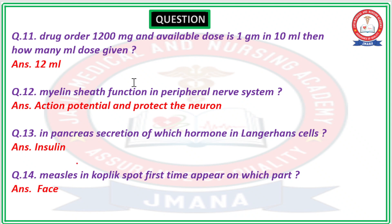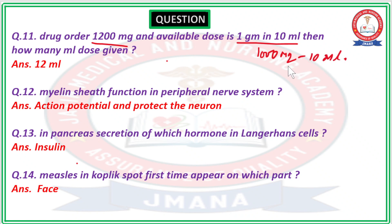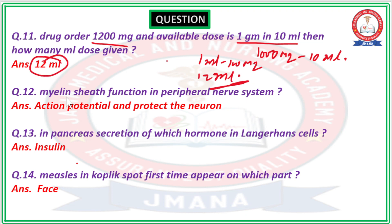Question number 11: A drug order is 1200 mg and the available dose is 1 gram in 10 ml. How many ml should be given? The available concentration is 1000 mg in 10 ml, meaning 100 mg per ml. To give 1200 mg, you need to administer 12 ml. Therefore the right answer is 12 ml.